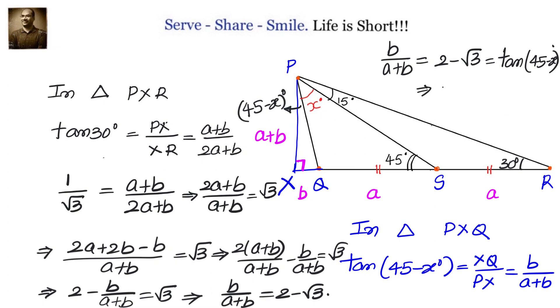Therefore tan of 45 minus X equals tan of 15 degrees, which tells us that 45 minus X equals 15 degrees, or X equals 30 degrees. So the value of X is 30 degrees.